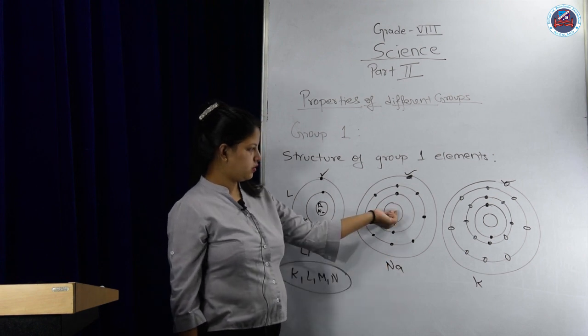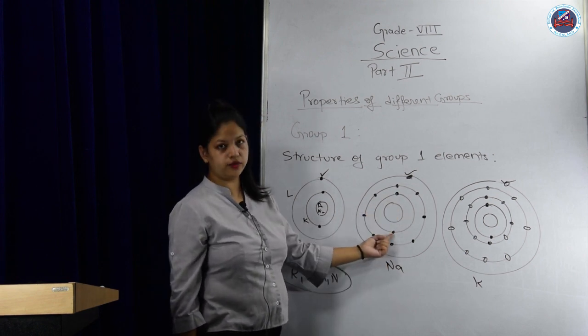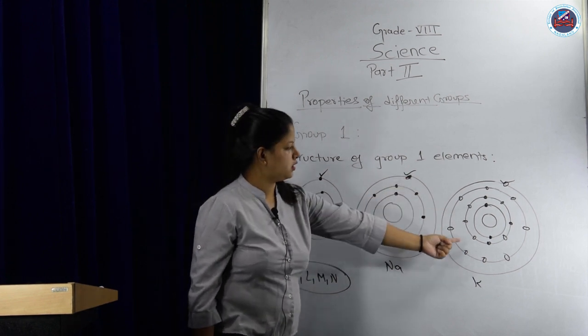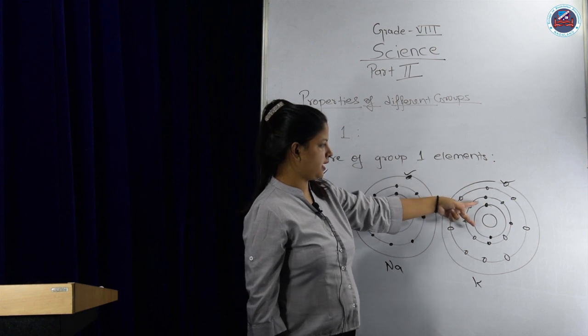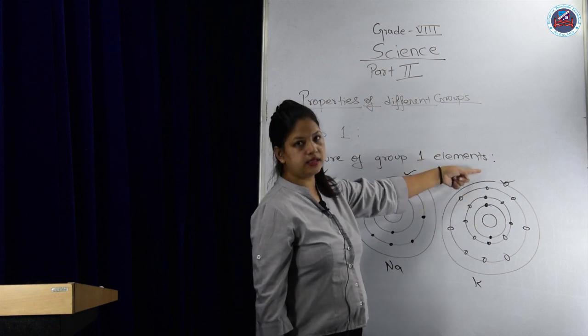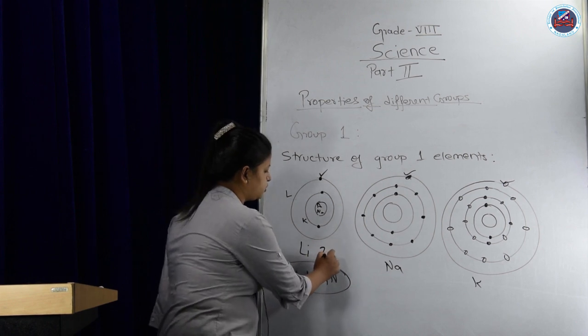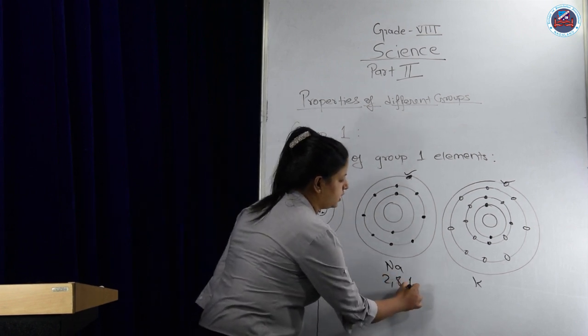For Na, there are 2 electrons in the first orbit, 8 in the second, and 1 in the third. For K, there are 2 electrons in the first shell, 8 in the second, 8 in the third, and 1 in the fourth.